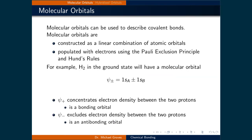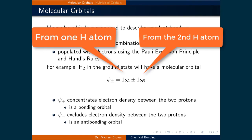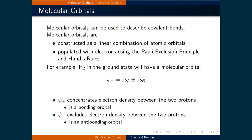Let's begin our discussion of molecular orbitals by looking at hydrogen. In the ground state, hydrogen will have two molecular orbitals. This is denoted as ψ± equal to the 1s orbital from one hydrogen atom plus or minus the 1s orbital from the second hydrogen atom. The two orbitals are denoted as ψ+ and ψ−, where ψ+ concentrates the electron density between the two protons due to constructive interference of the two waves. Because the electron density is concentrated between the protons, it is referred to as a bonding orbital.